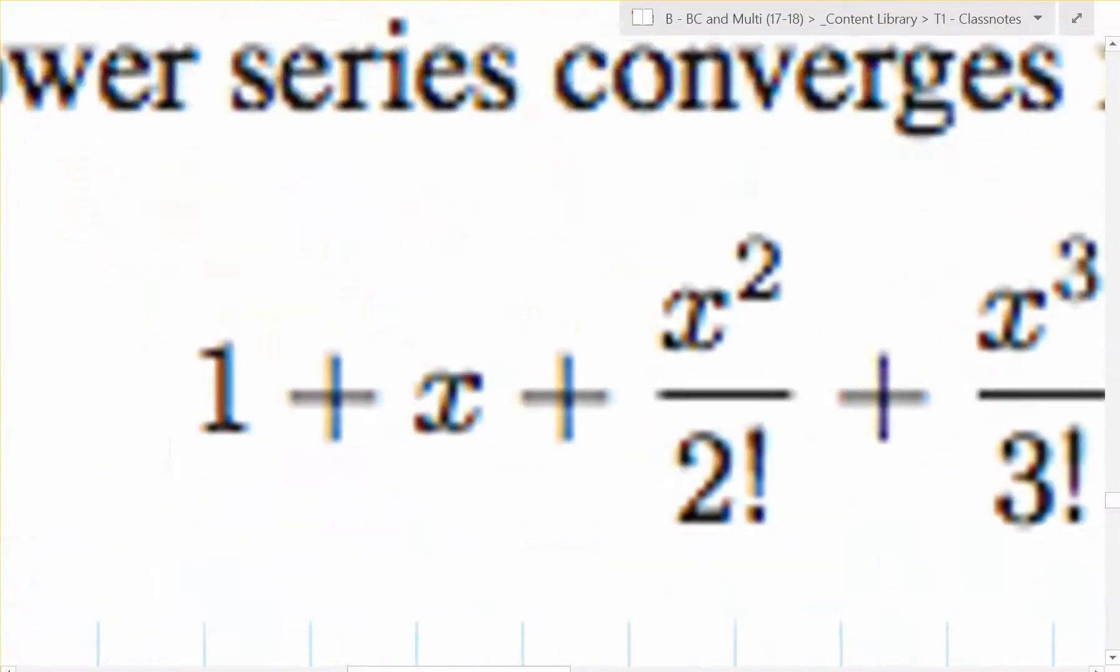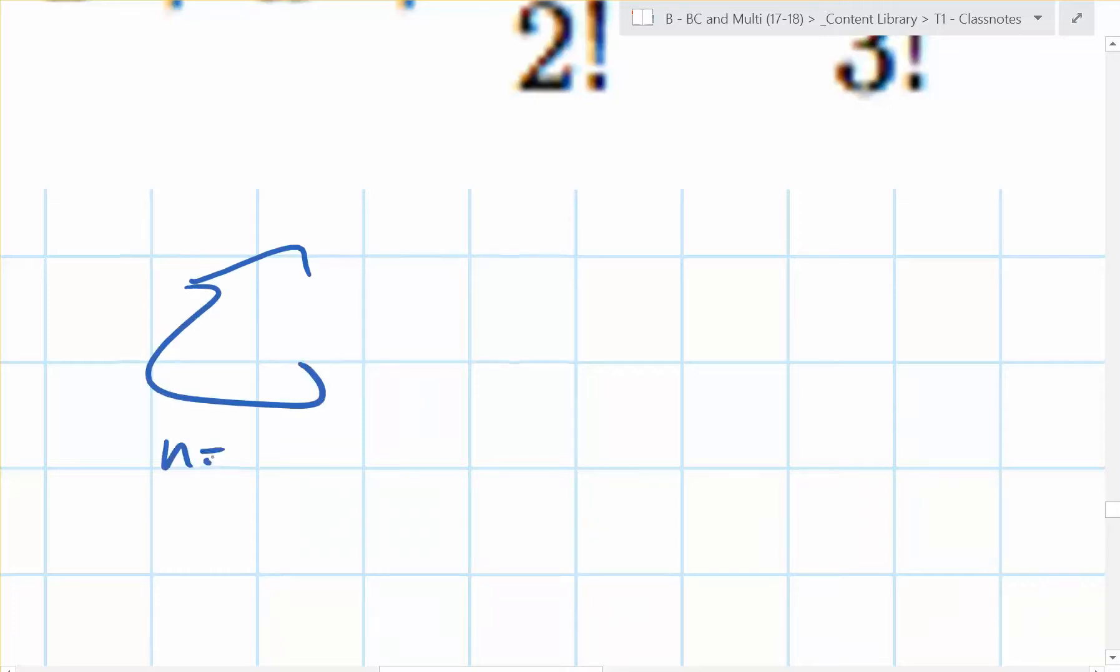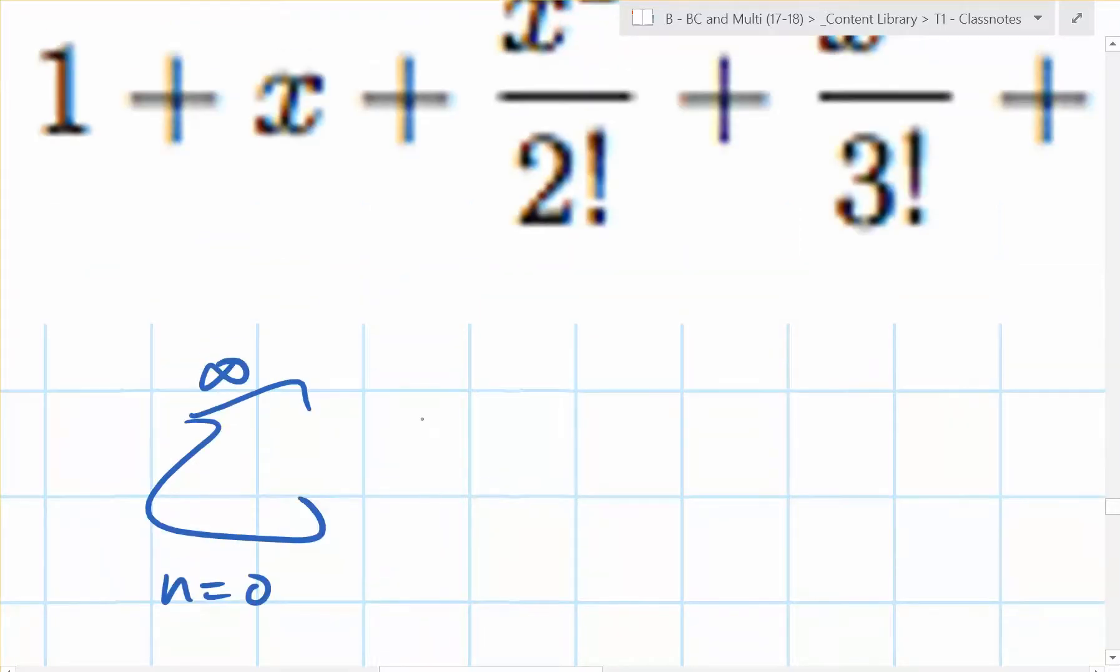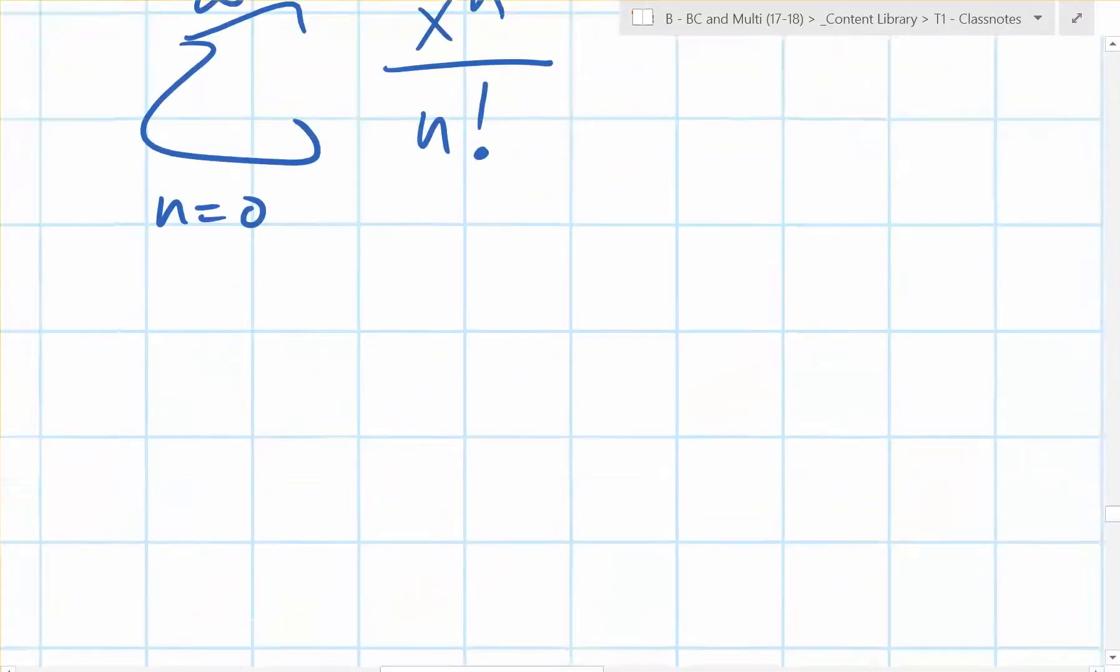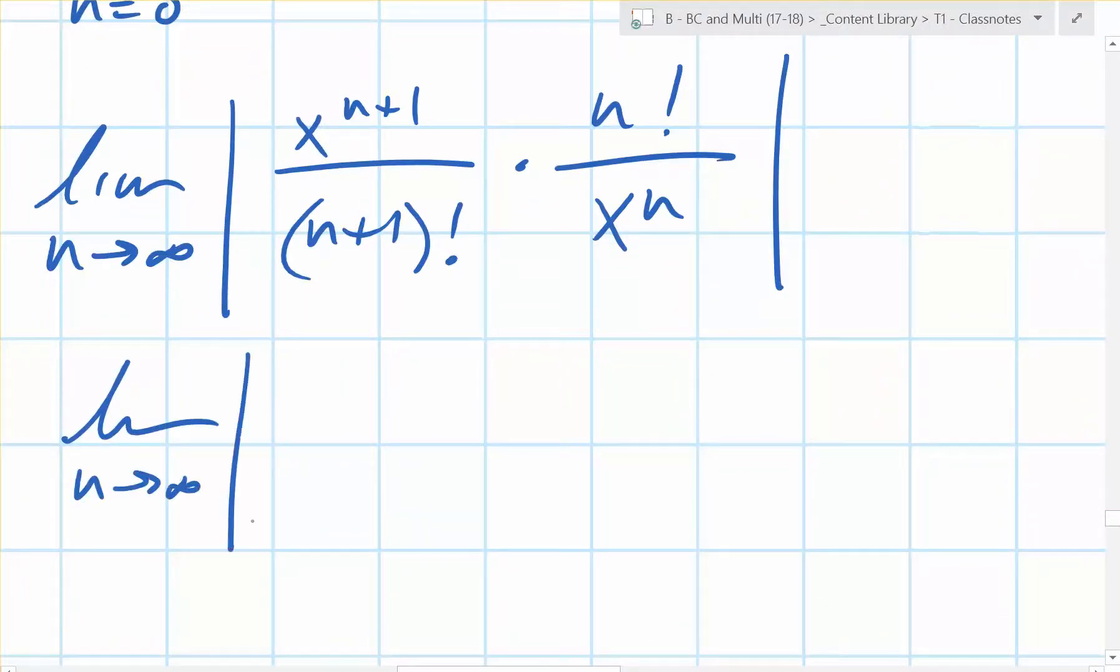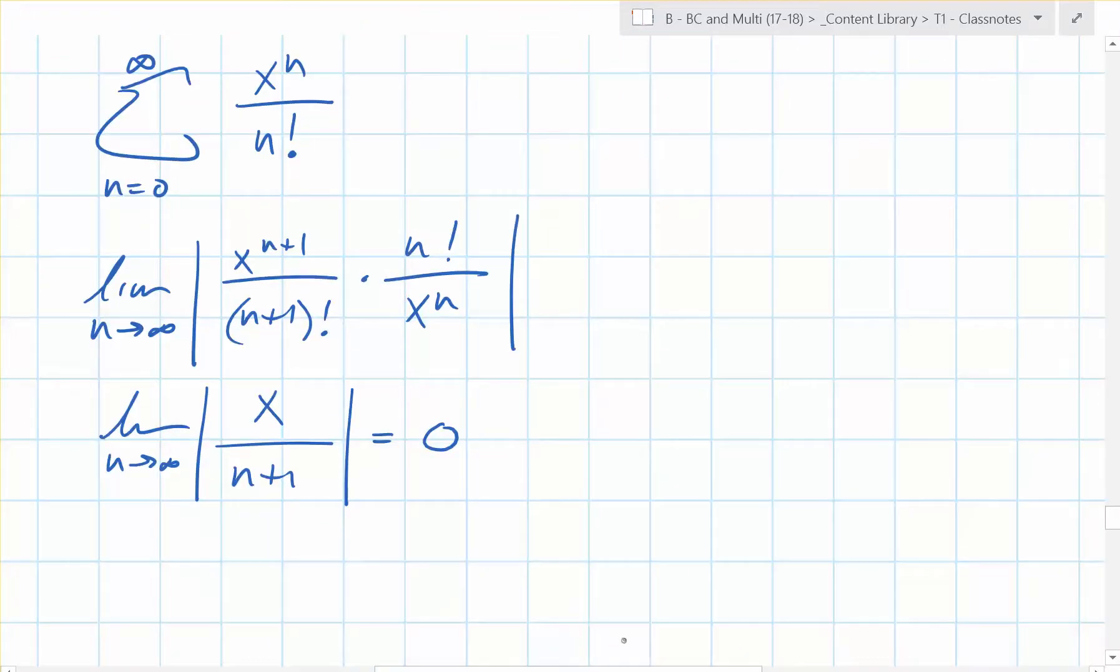What is it? It's a sum from n equals 0 to infinity of x to the power of n over n factorial. Is 0 factorial defined as 1? Yeah, it is. So that does work. You're running the ratio test. So the limit as n goes to infinity of the absolute value of x over n plus 1. No matter what x is, x is a constant. It's finite. But n goes on and on. This is 0.